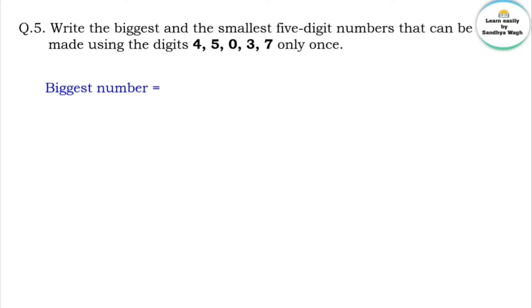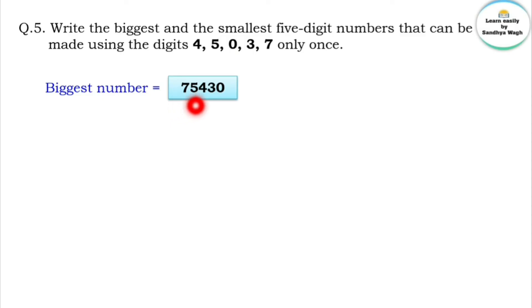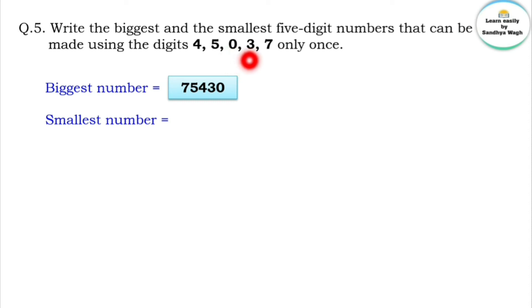To form the biggest number, we arrange the digits in descending order. To form the smallest number, we arrange in ascending order — placing zero appropriately so it does not become the leading digit. The smallest number is 30,457 — thirty thousand four hundred and fifty-seven.